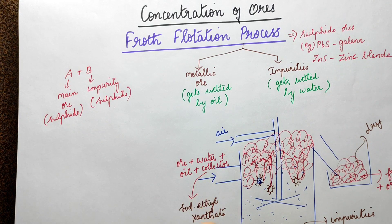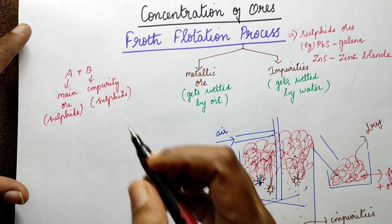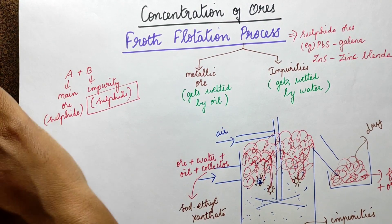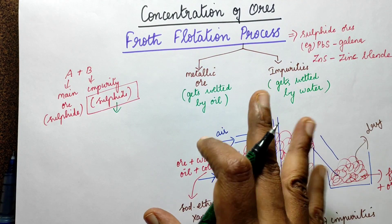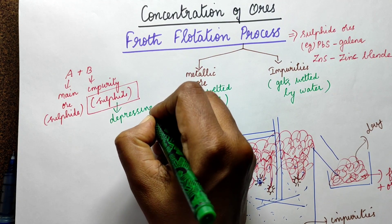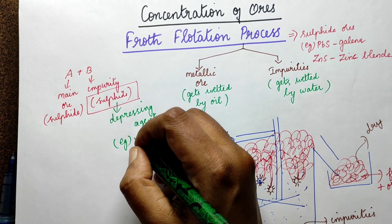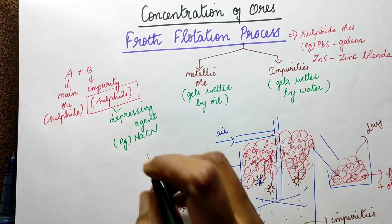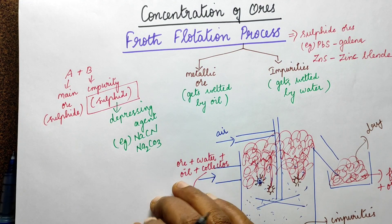Now if there are two sulphides in the ore — one is the main metal and one is an impurity — we use a depressing agent. The impurity part of the sulphide is depressed using a depressing agent. The depressing agents commonly used are sodium cyanide (NaCN) and sodium carbonate (Na2CO3).